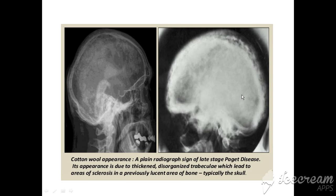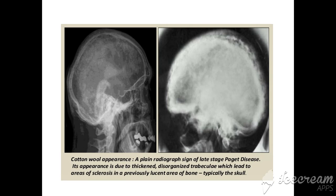Besides that, this is the radiographic feature of Paget disease. We can see that it looks like cotton wool, so that is why this radiograph is also called the cotton wool appearance. We can see there is radiolucency in some areas and much radiopacity, because this is the advanced stage of Paget disease with much osteosclerosis. The initial stages have gone and now it is an advanced stage. This is the typical appearance of Paget disease showing the cotton wool radiographic feature.